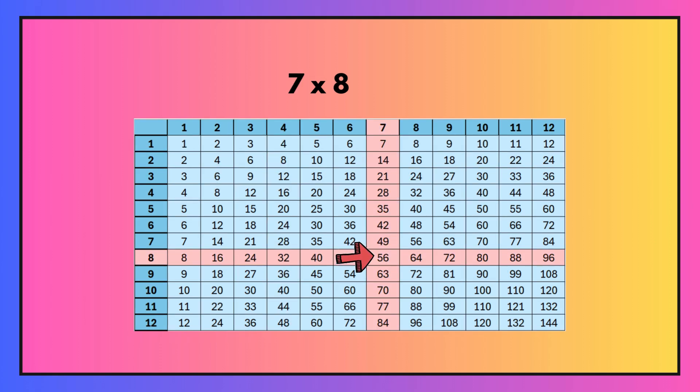Second example is seven times eight. So I've selected seven from the top, eight from the side, followed them down and across and they meet at 56.